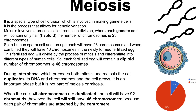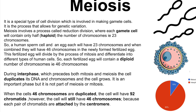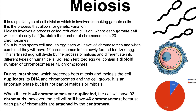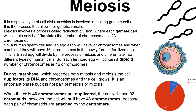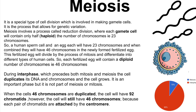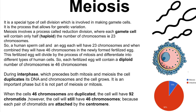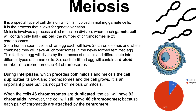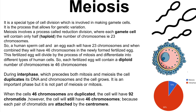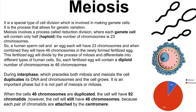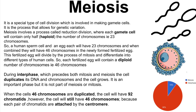During interphase, which precedes both mitosis and meiosis, the cell duplicates its DNA and chromosomes, and the cell grows. It is an important phase, but is not part of meiosis or mitosis. When the cell's 46 chromosomes are duplicated, the cell will have 92 chromatids. However, the cell will still have 46 chromosomes, because each pair of chromatids are attached by the centromere.